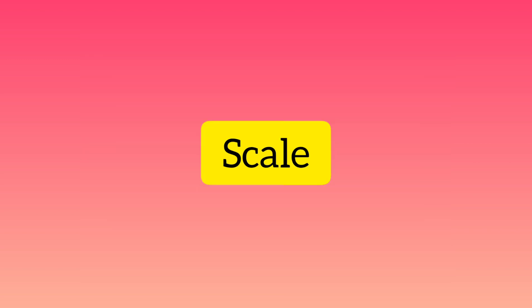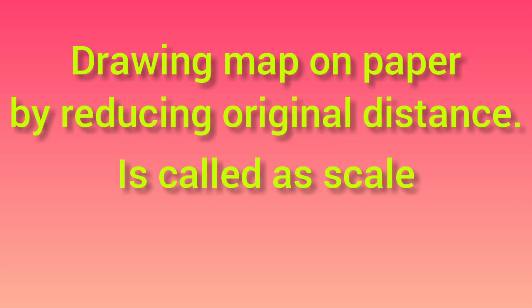Next, we will discuss about scale. Scale is drawing a map on paper by reducing the original distance — that is called scale. When you talk about India, India is a large country but we represent it on a small piece of paper. This is possible because of the scale. Suppose 10 cm equals 1 cm — we are reducing and representing it on a piece of paper. That is called scale.